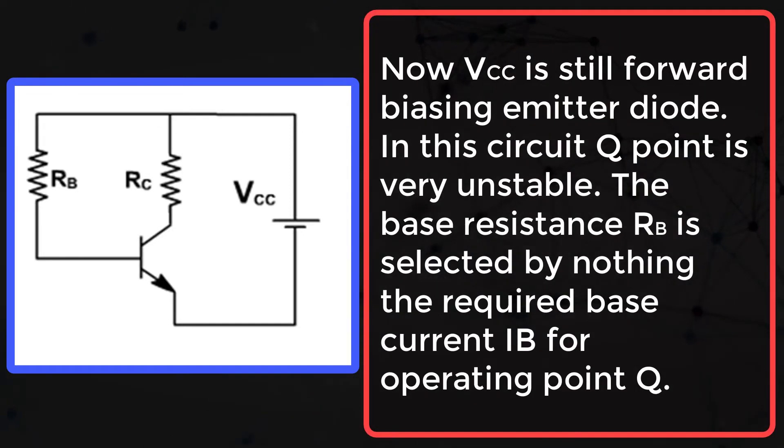Now VCC is still forward biasing emitter diode. In this circuit Q point is very unstable. The base resistance RB is selected by noting the required base current IB for operating point Q.